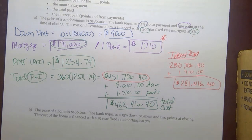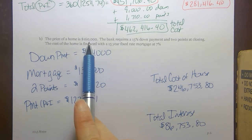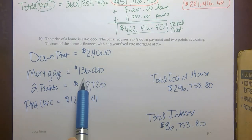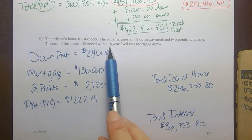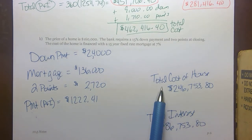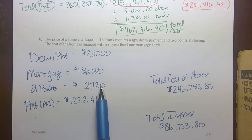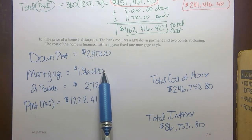Pause the video to work through problem B where the home price is $160,000, then check your answers. For B: the down payment is 15% of the selling price; the mortgage is the selling price minus the down payment; two points are 2% of the mortgage. The monthly payment formula gives a principal and interest payment of $1,222.41. It's a 15-year mortgage, so 180 payments. To get total interest, take the total P&I, subtract the mortgage principal, and add the points.